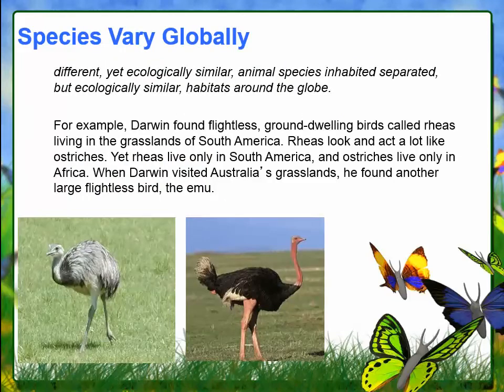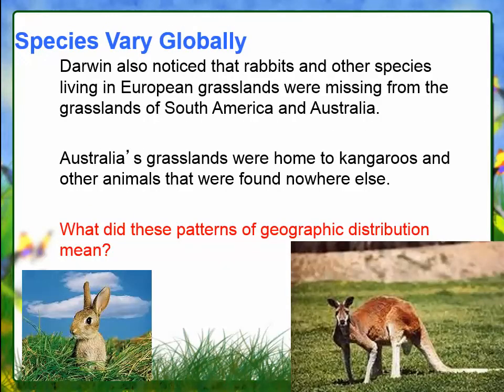As far as species varying globally, that means you might have ecologically similar species even though they live in different parts of the world, but they don't necessarily have a common ancestor. For example, ostriches were in Africa, rheas were in South America, and emus were in Australia. Also, you can have totally different animals in similar environments like grasslands, and some animals, such as the kangaroo, are only found in one place — Australia.